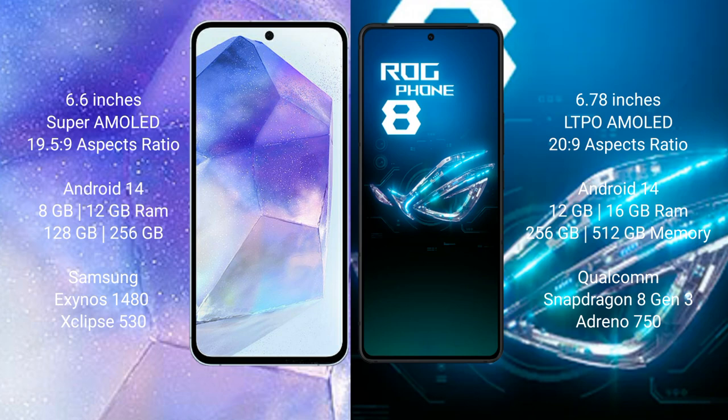Samsung Galaxy A55 comes with 8GB and 12GB RAM, and 128GB and 256GB internal storage. It features the Samsung Exynos 1480 processor with Xclipse 530 GPU chipset.